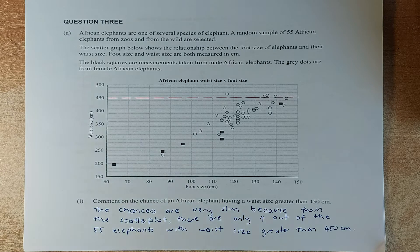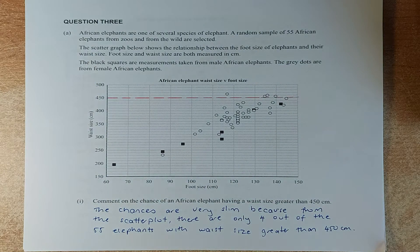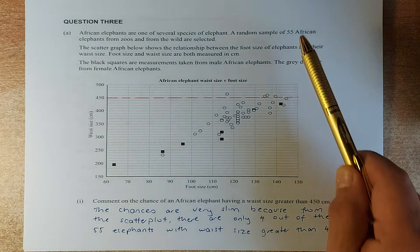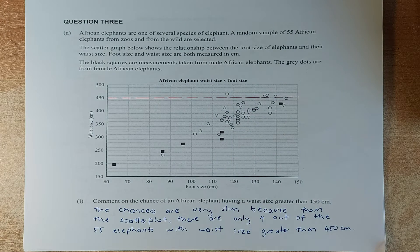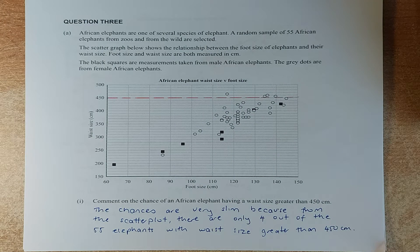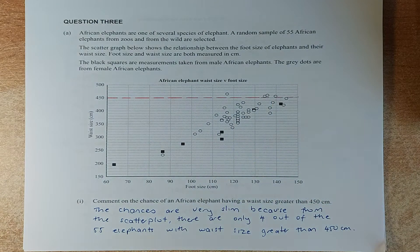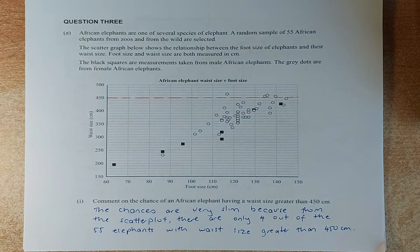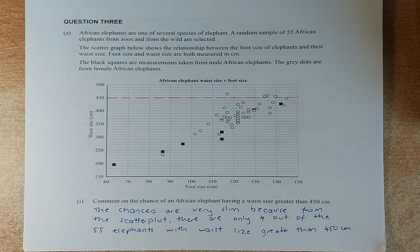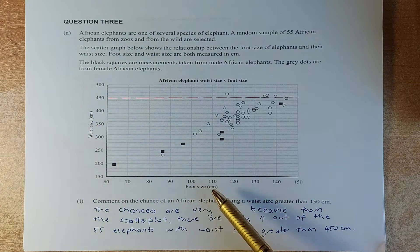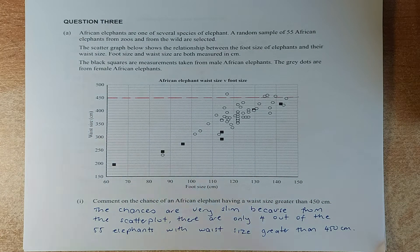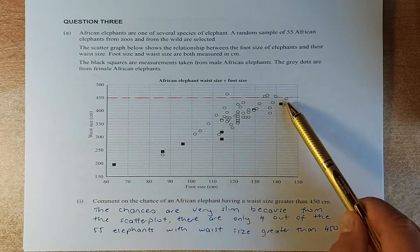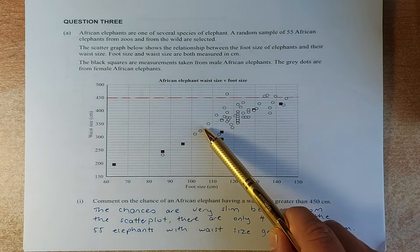We shall look at question 3. African elephants are one of several species of elephant. A random sample of 55 African elephants from zoos and from the wild were selected. The scatter graph shows the relationship between the foot size, which is on the x-axis, and their waist size on the y-axis. Foot size and waist size are both measured in centimeter. The black squares represent the measurement taken from the male African elephant, so the squares are the male elephants and the grey dots are the female.